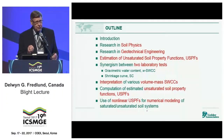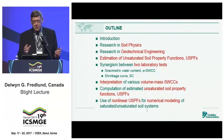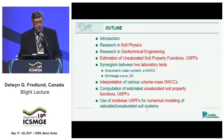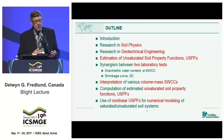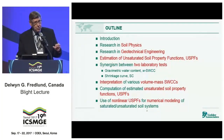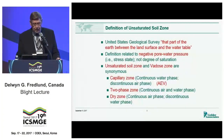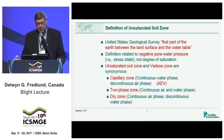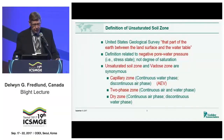We can take two tests — one for the soil-water characteristic curve and the other for the shrinkage curve — and bring those two tests together. We can interpret all of the volume-mass relationships versus suction from those two tests, and then use them to calculate estimated unsaturated soil property functions. These are really the extension of our saturated properties into the unsaturated soils range. Once we have those functions, we can combine the unsaturated zone with the saturated zone and treat it as a continuum for numerical modeling.